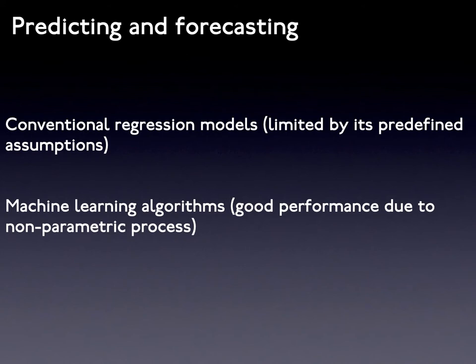Traditional statistical regression techniques have been used to explain the factors underlying severe injuries as well as to predict the severity outcome of specific crashes. These regression models can directly provide a reasonable theoretical interpretation and precisely reveal the relationships of different factors through an analytical approach. However, they impose specific mathematical forms between dependent and explanatory variables, which rely on several predefined assumptions. Compared to other algorithms, the prediction performance of regression models is weak due to their fixed assumptions.